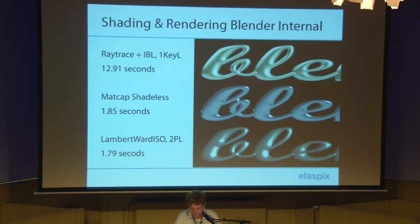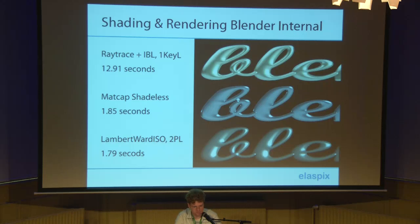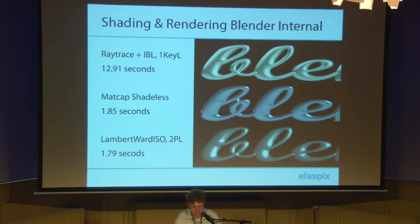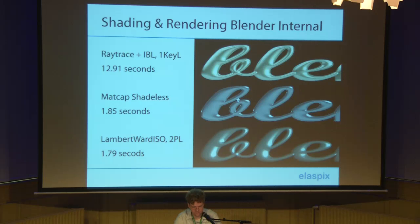So if we have finished the modeling phase, we could work on the shaders. You may have noticed that we use two renderers. We use Blender Internal rendering and we also use Cycles. Blender Internal we use to give very fast feedback to the customer. And after a couple of seconds, if the customer is not changing any letters anymore, then the more photorealistic rendering from Cycles follows the Blender Internal rendering.